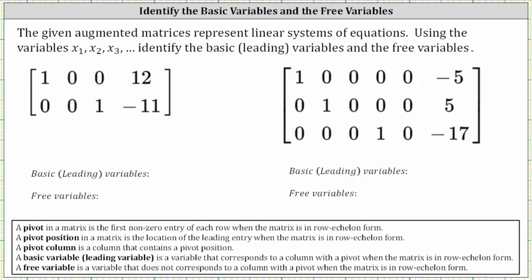We begin by determining the pivots. A pivot in a matrix is the first non-zero entry of each row when the matrix is in row echelon form or reduced row echelon form.